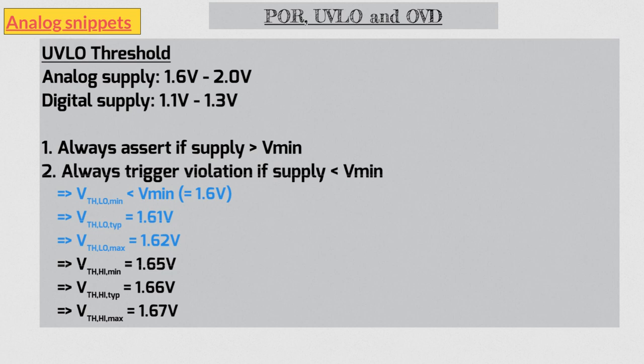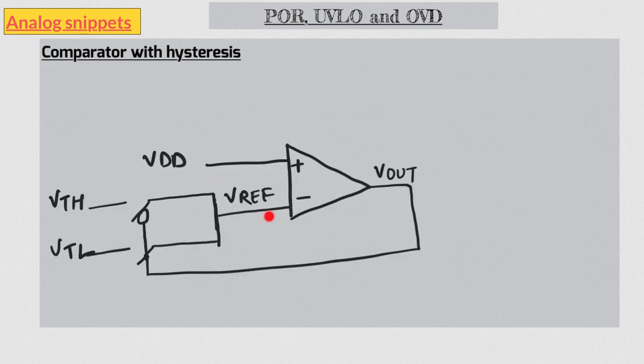Now let's look at a hysteretic comparator design. This design has a normal voltage comparator at the core. A supply voltage or its attenuated version is applied at the plus terminal, and the minus terminal, which has the reference voltage, has two switches. These switches operate in complementary fashion; that means if one is on, the other is off. The circle over here indicates the digital inversion. The switches are controlled by the comparator output itself. When supply is low, the comparator output is low as well, and that selects the VTH as a reference.